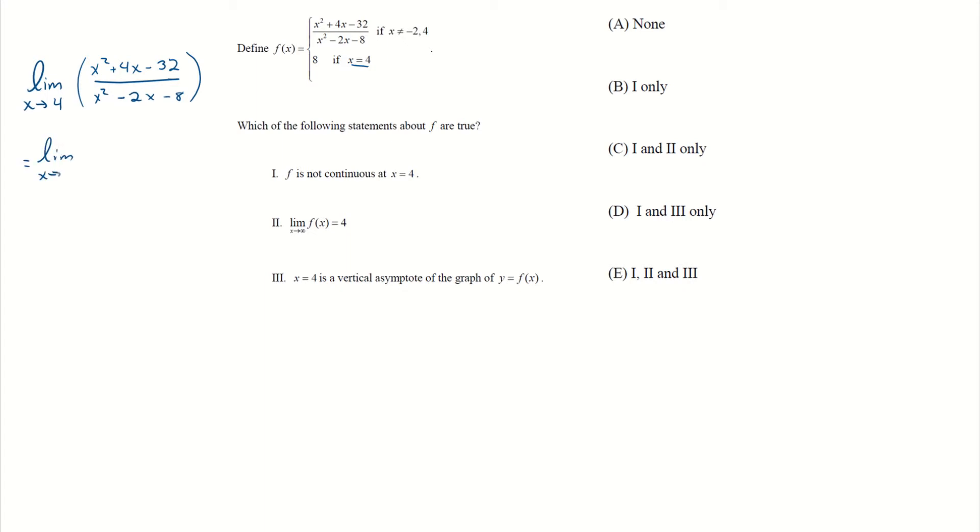All right, so direct substitution isn't going to work because that will cause a 0 denominator. So we will try and factor and cancel this guy. Okay, the top after I find factors of negative 32 that add to positive 4 gives me x plus 8, x minus 4. And then factors of negative 8 that add to negative 2 gives me x minus 4, x plus 2. With that, the x minus 4s cancel, meaning I'm left with the limit as x approaches 4 of x plus 8 over x plus 2. I got rid of my 4, so I can direct substitute. I have 12 over 6, which is equal to 2. That means the limit as x approaches 4 equals 2. However, it is defined to be 8. So there is a little hole in the graph there. It is not continuous, which actually means number 1 is true.